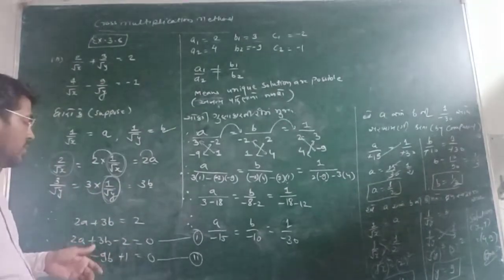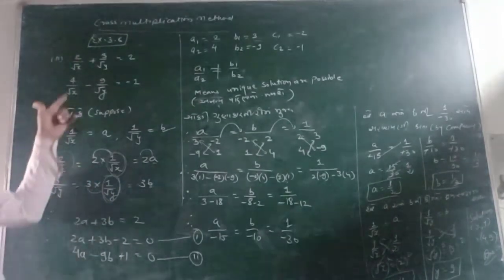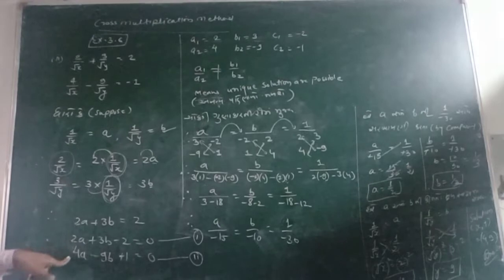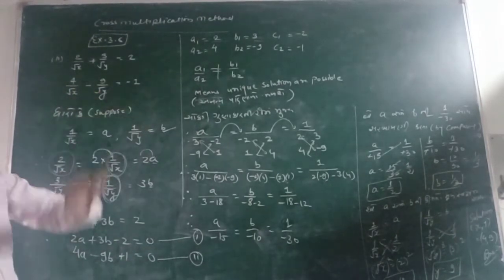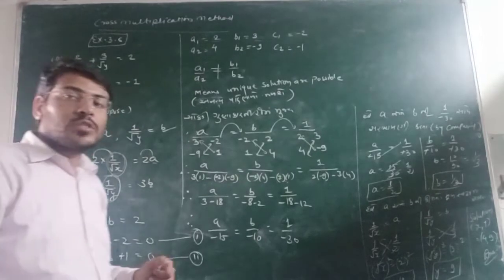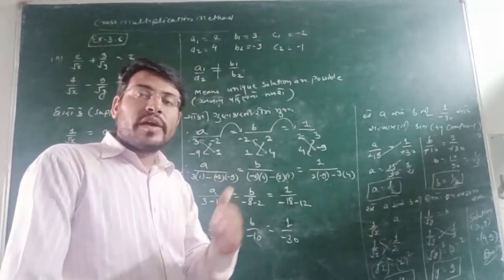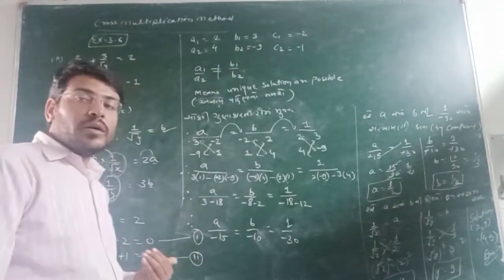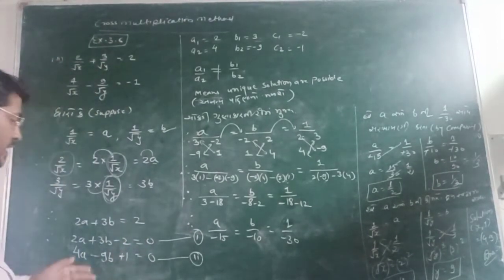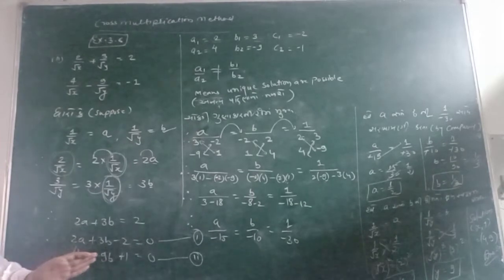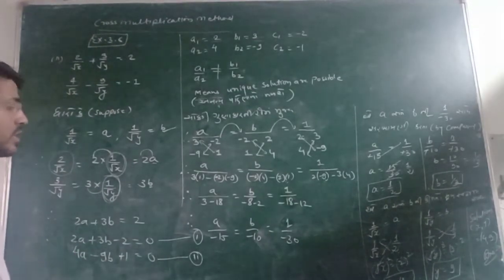On the very same condition, we will do the second data. So, 4 upon root x, it will be 4a. 9 upon root y, it will be 9b. And, as we all know that, when we are going to solve cross multiplication method, all the variables should be on the left hand side of 0. So, friends,